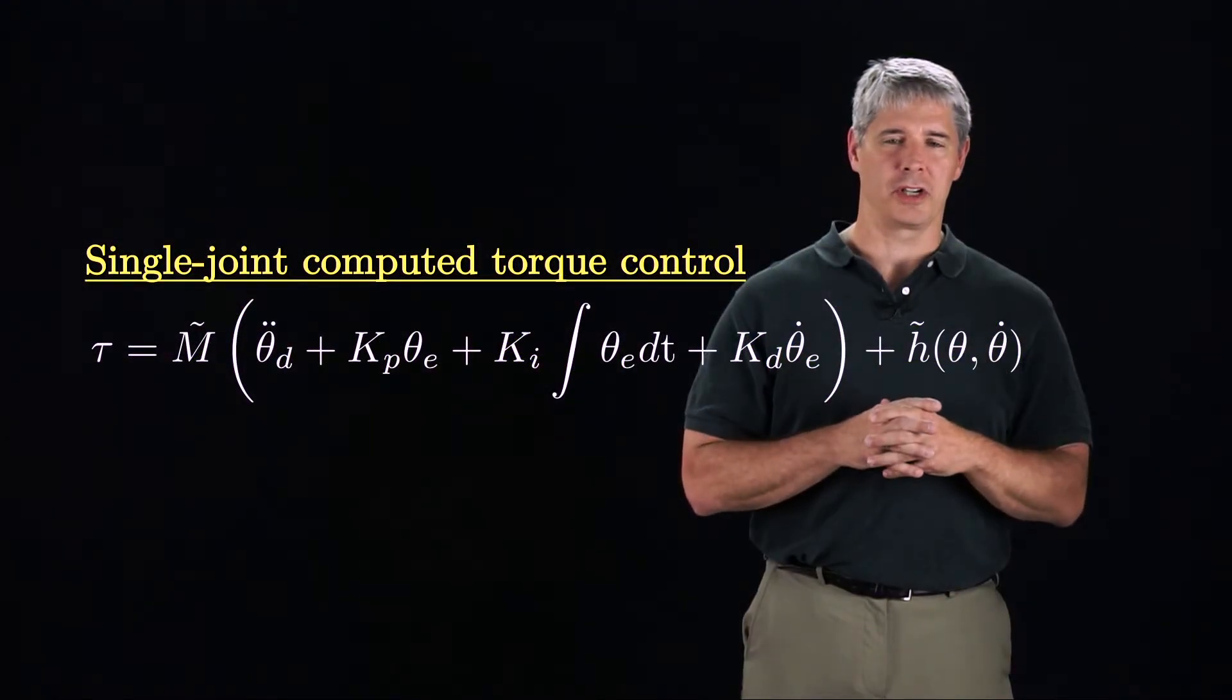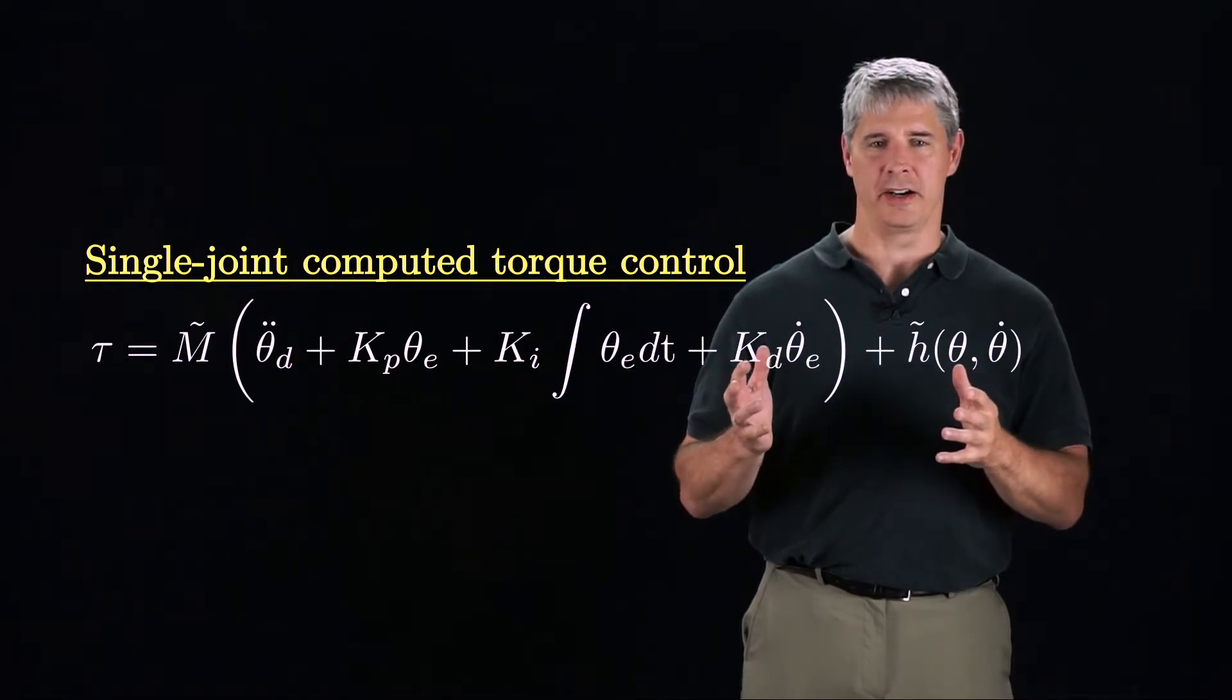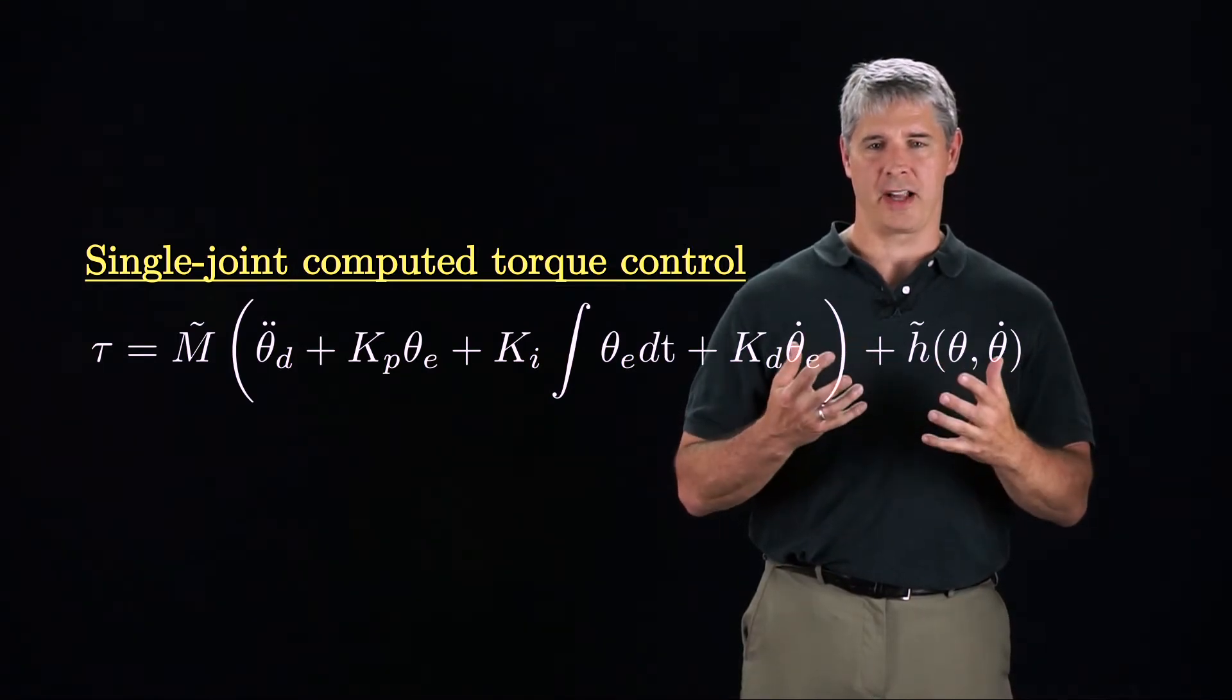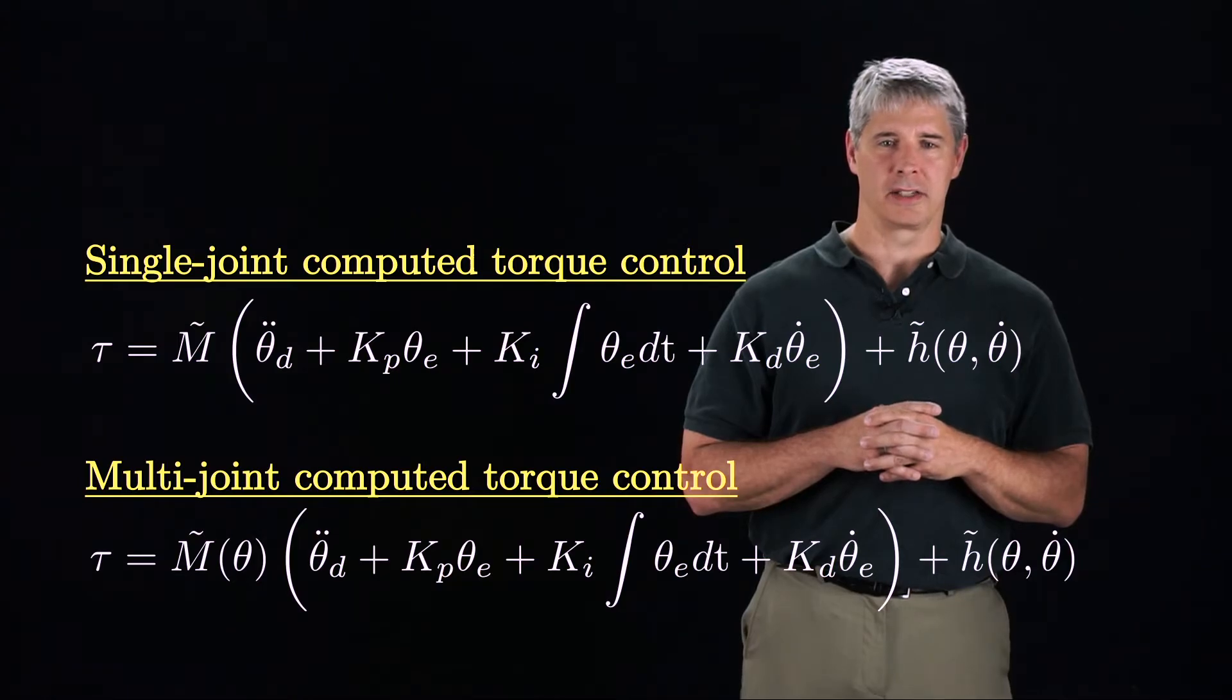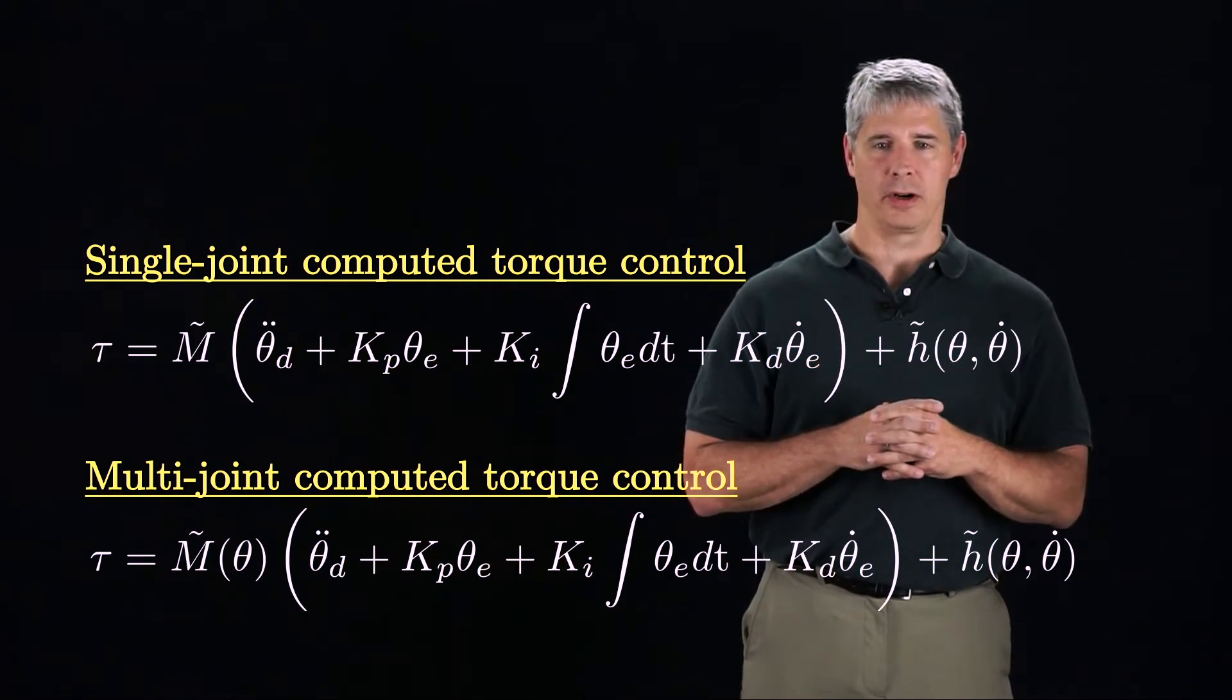To summarize, the single-joint computed torque control law is given here. This controller generalizes readily to multi-joint robots. The difference is that tau, theta d, and theta e are vectors.